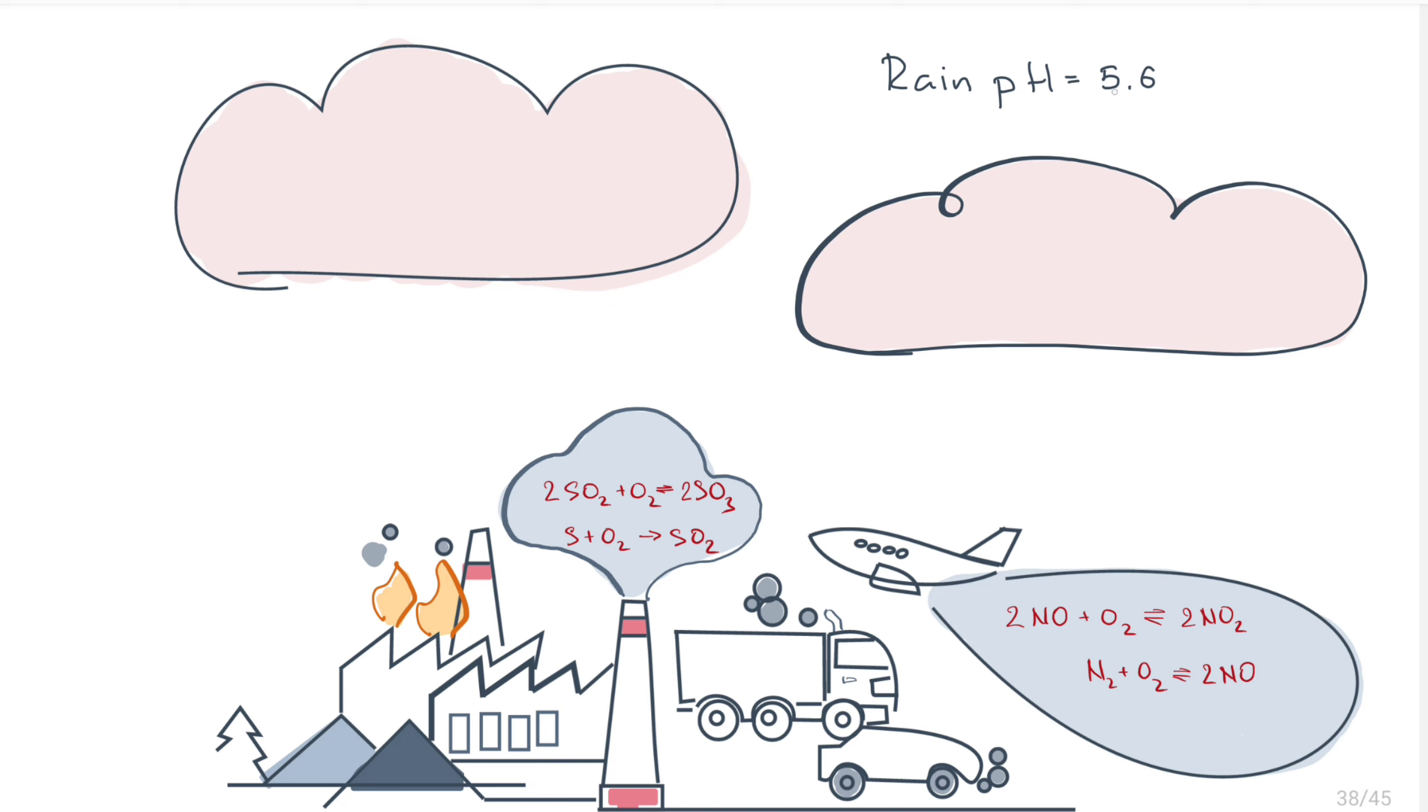Rain is naturally acidic with a pH of 5.6 because of the high production of carbon dioxide by living organisms.